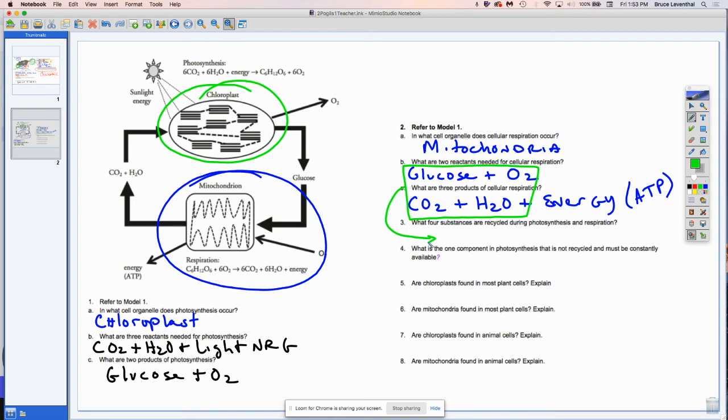What is the one component in photosynthesis that is not recycled back and must be continuously replenished? And that is the energy from the sun.